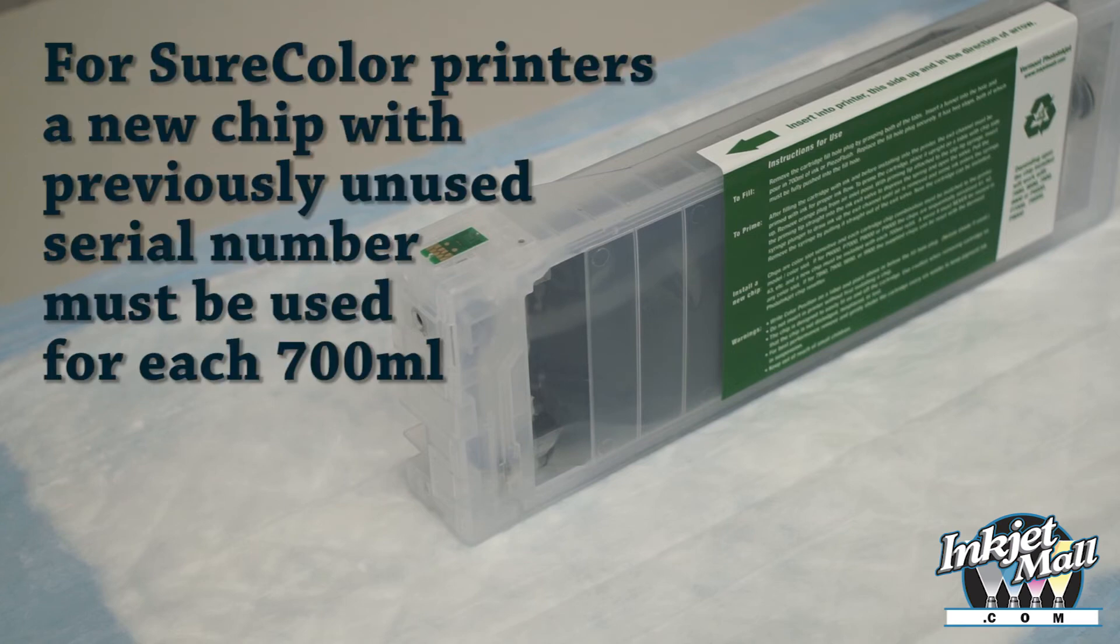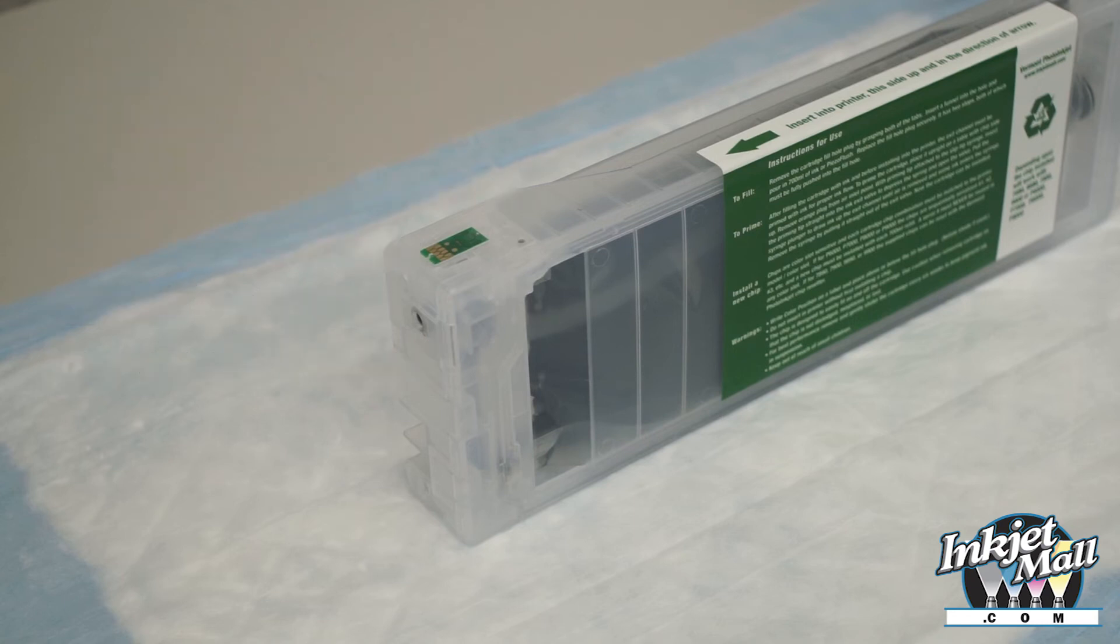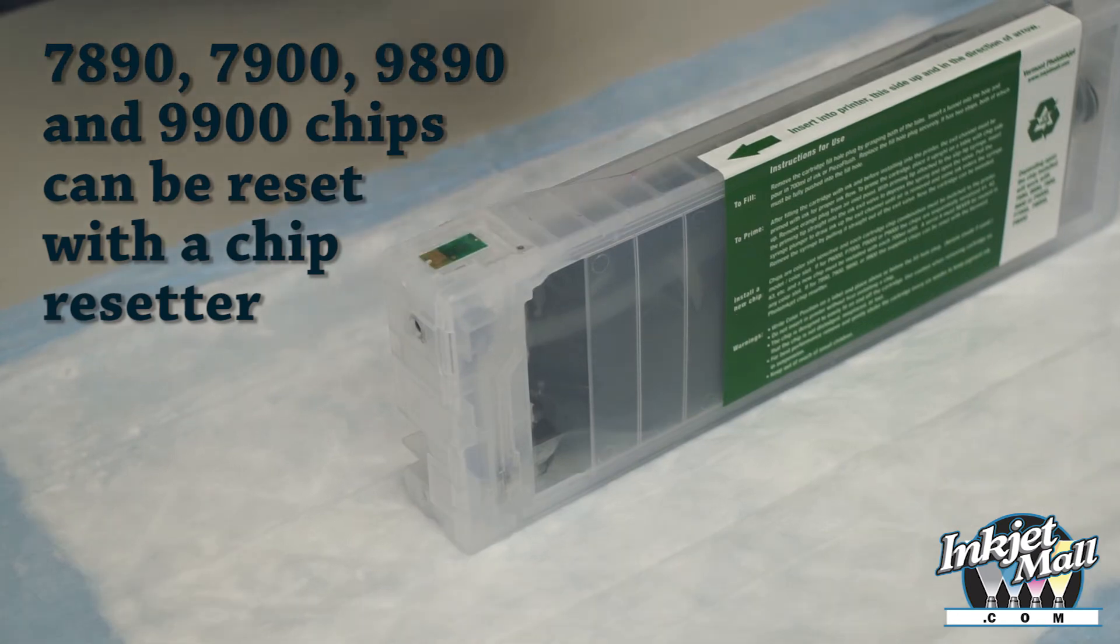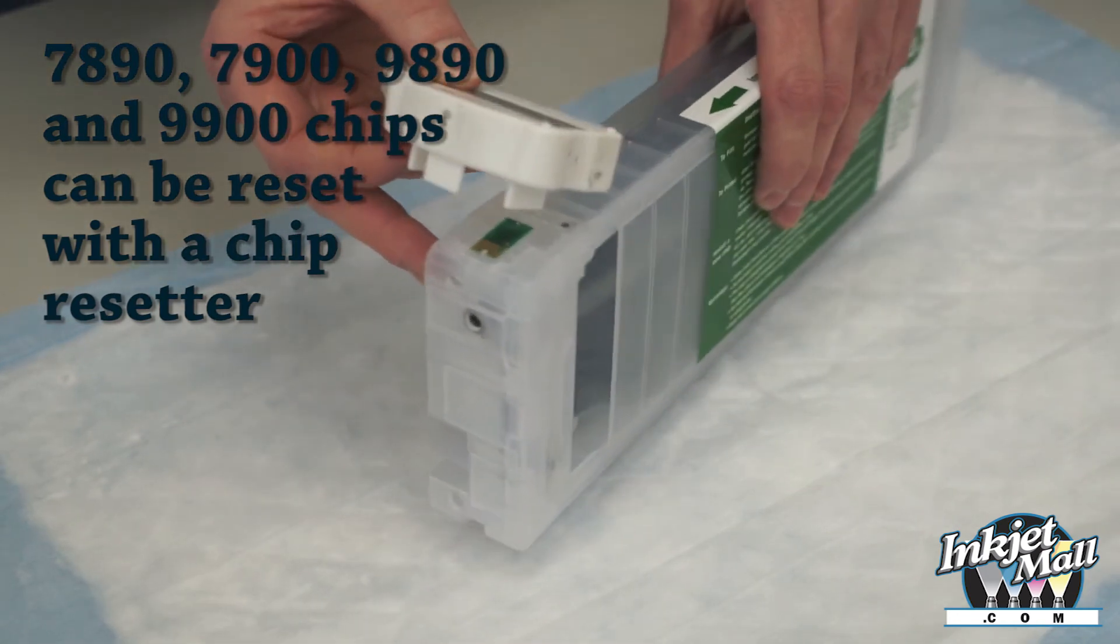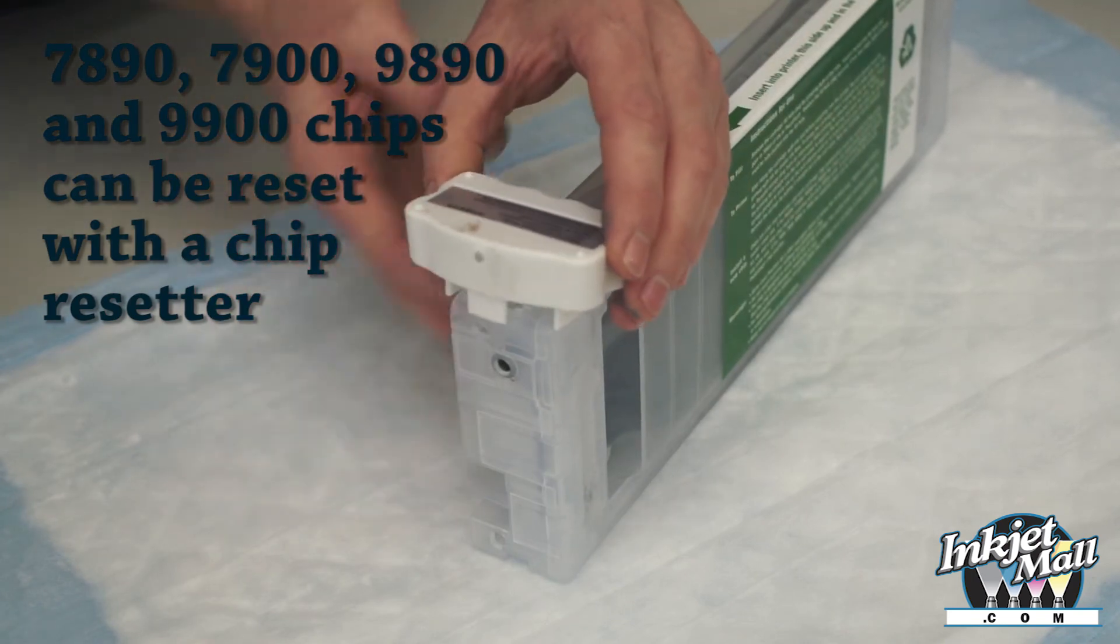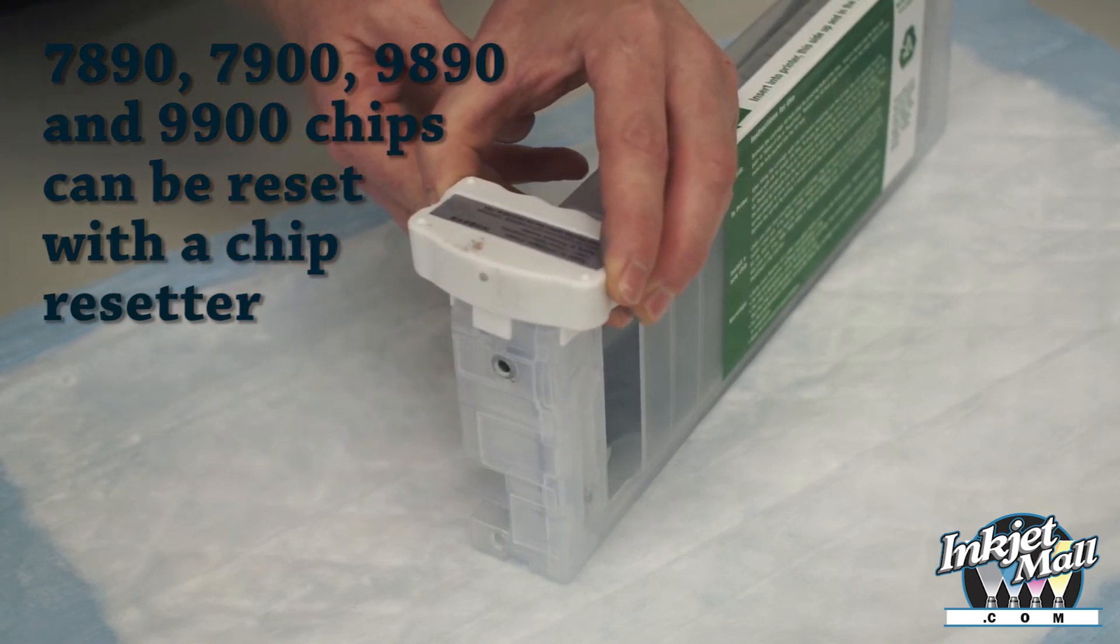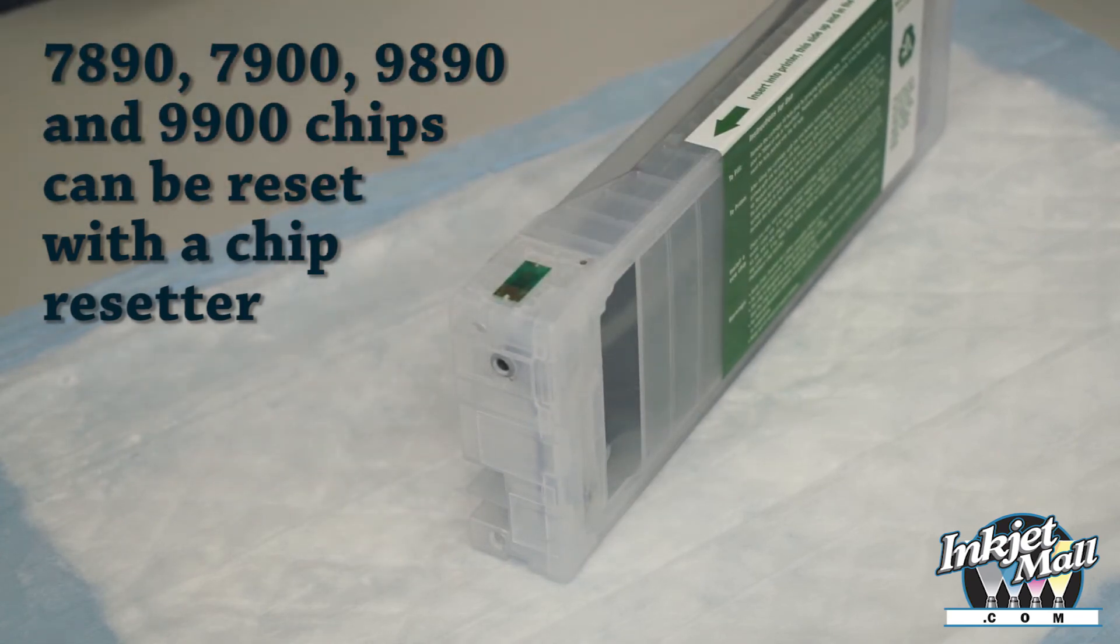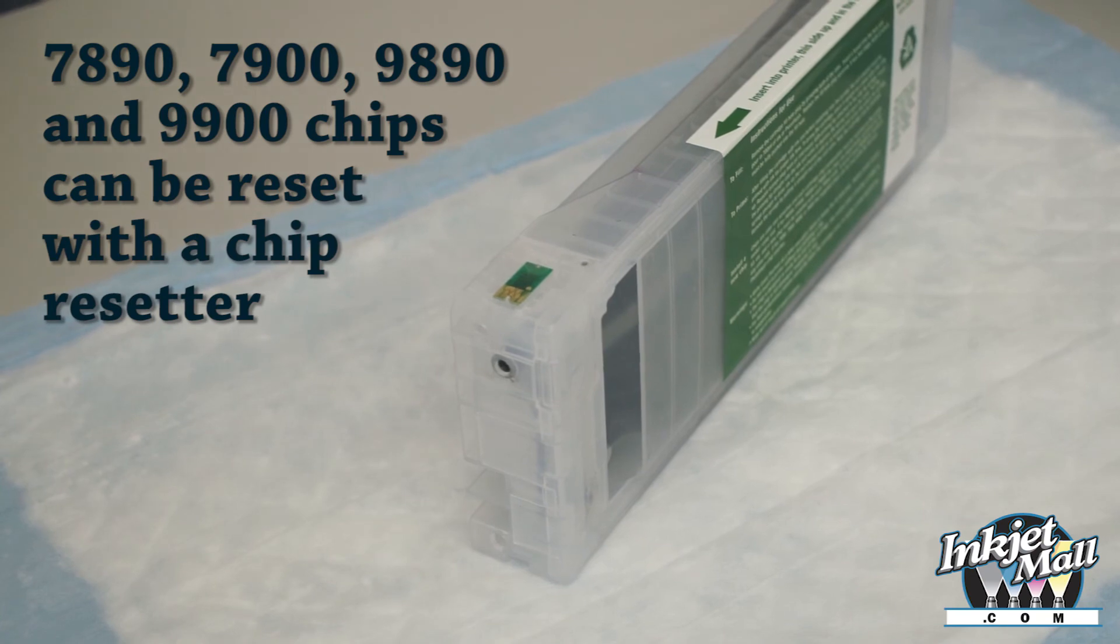The SureColor printers come with one-time chips. That means you need a new chip after the cartridge is empty. For all other printers, resettable chips are available. To reset the chip, place the resetter against the cartridge chip using the guides shown in the video. The resetter light will flash red several times, then turn solid green to indicate the reset is complete.